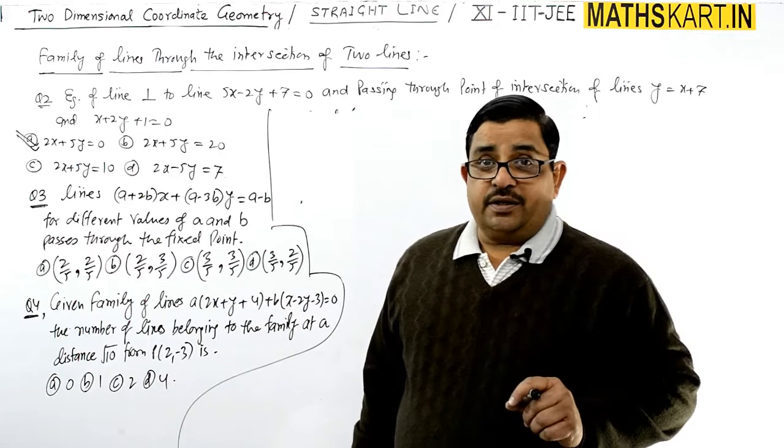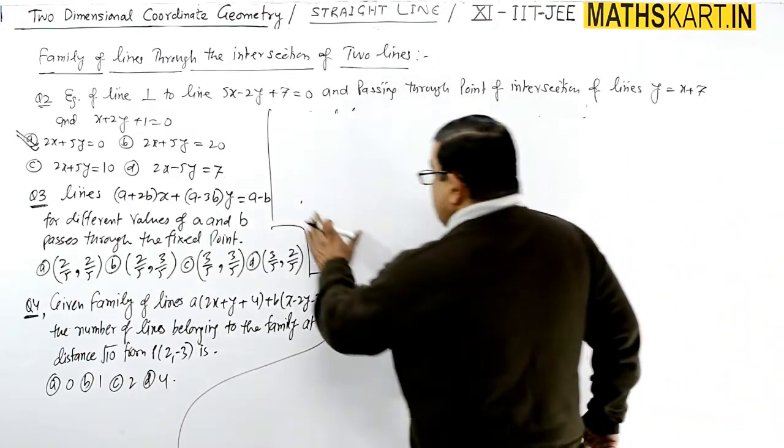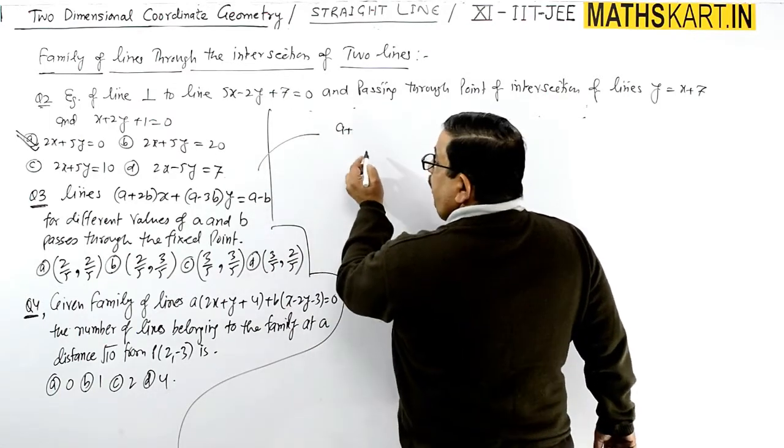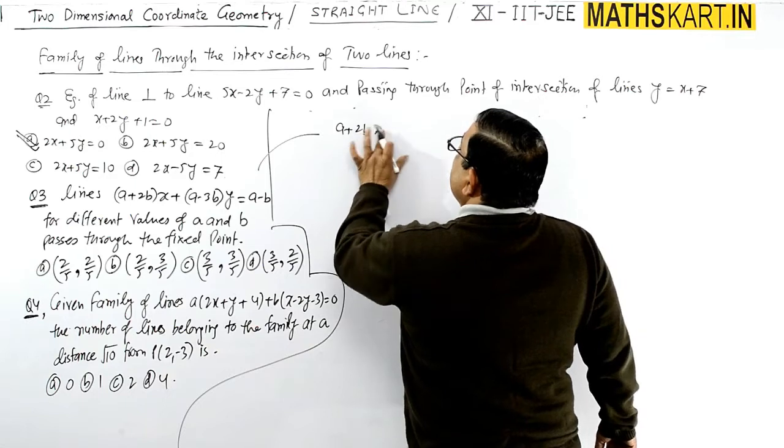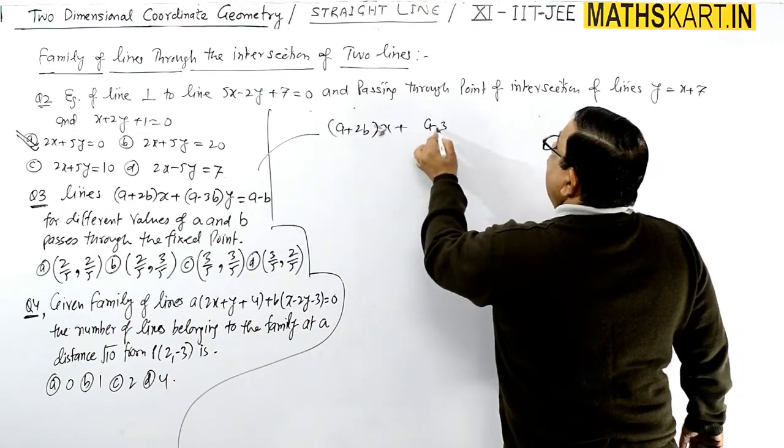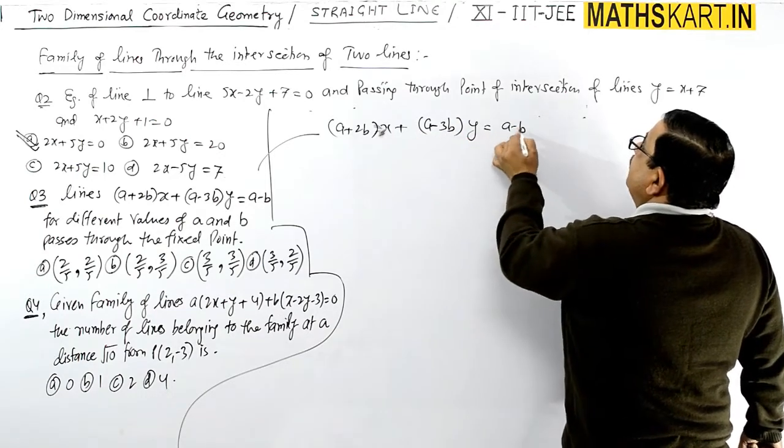That particular point is the fixed point we need to find. Let me restate: question number three is (a+2b)x + (a-3b)y = a-b.